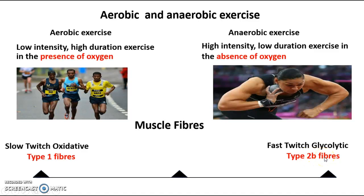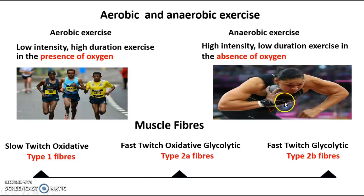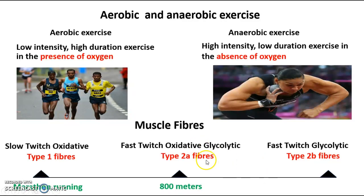The type 2b is the last fibre you recruit. So you've got slow oxidative fibres used for aerobic exercise such as marathon running, whereas the fast twitch glycolytic or type 2b fibre will be used for things such as shot put. The middle fibre is a fast twitch oxidative glycolytic because it can be used for some aerobic and some anaerobic activities. For marathon running use the slow twitch type 1; for middle distance such as 800 metres use the fast twitch oxidative glycolytic; for the highest intensity work like 100m sprint or shot put, use the fast glycolytic type 2b.